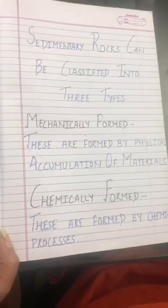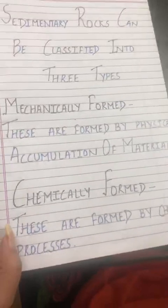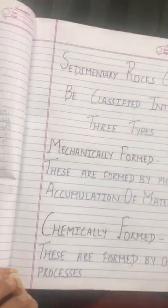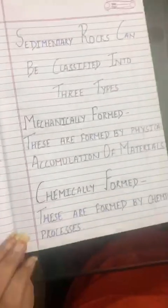Sedimentary rocks can be classified into three types: mechanically formed, chemically formed, and organically formed. Mechanically formed rocks are formed by the physical accumulation of material. Chemically formed rocks are formed by chemical processes — whether through climatic changes or other circumstances where one or more chemical reactions take place.